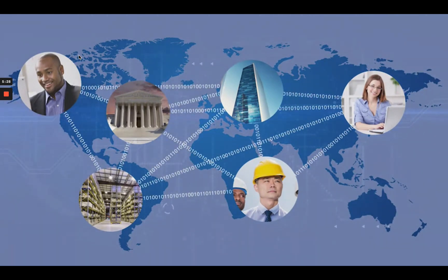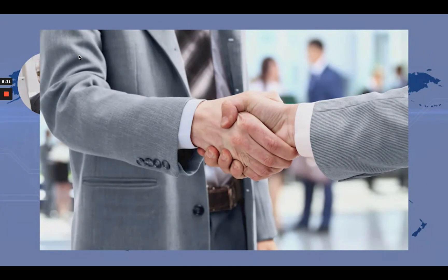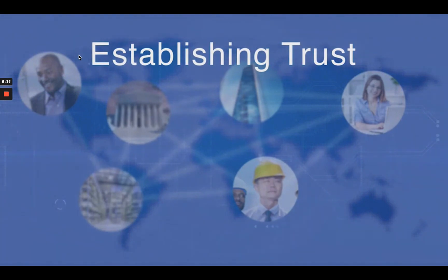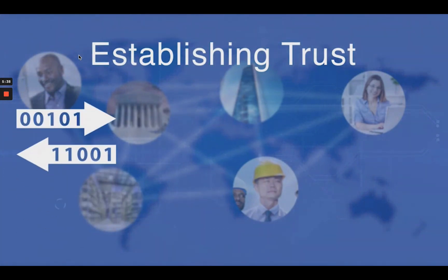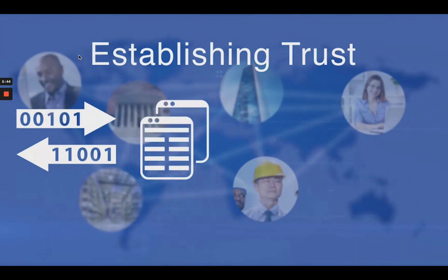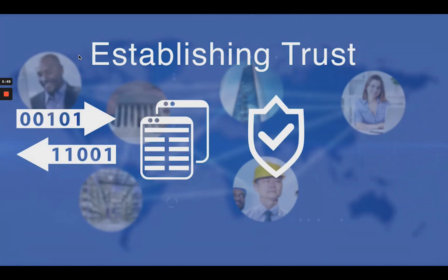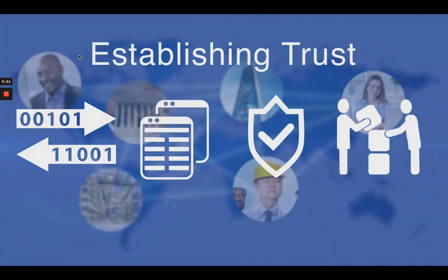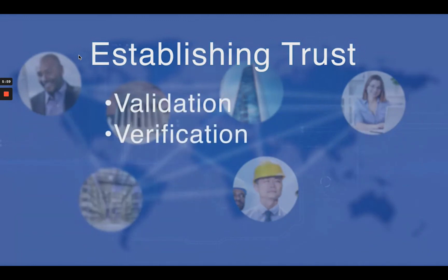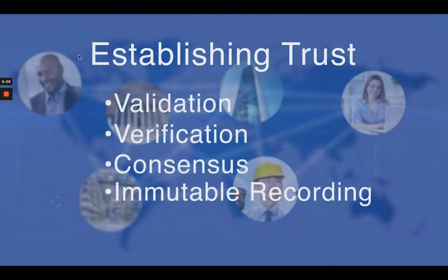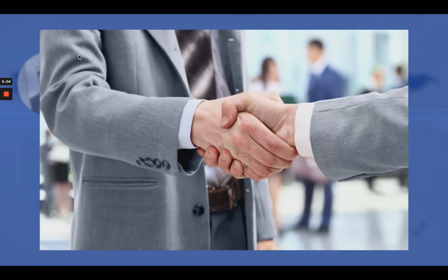How do we establish trust among the peers in such a decentralized system? By having a process in place to validate, verify, and confirm transactions; record the transaction in a distributed ledger of blocks; create a tamper-proof record — a chain of blocks; and implement a consensus protocol for agreement on the block to be added to the chain. Validation, verification, consensus, and immutable recording lead to the trust and security of the blockchain.